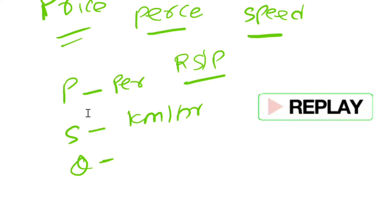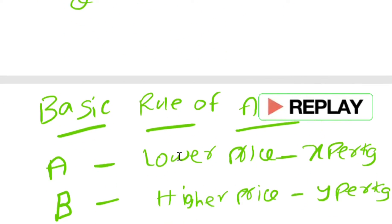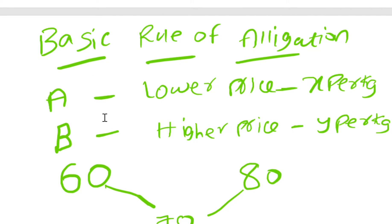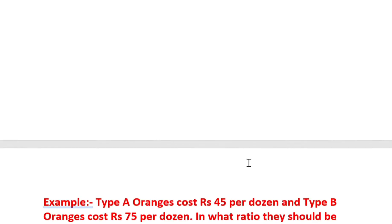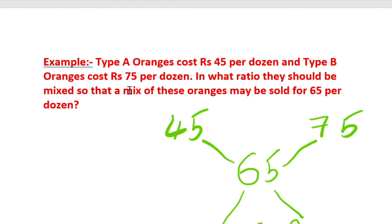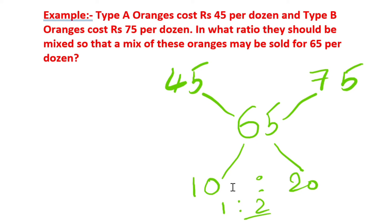I told you that quantities must be in the same units — if it is percentage it should be in percentage, if it is speed it should be in kilometers. I explained the basic rule of allegation with one simple example. If you missed that last session, you can visit it — the link is attached in the description.